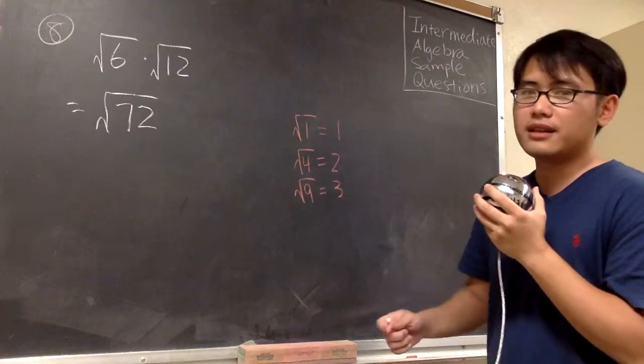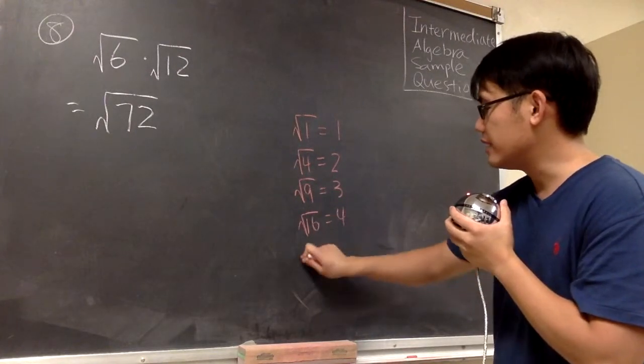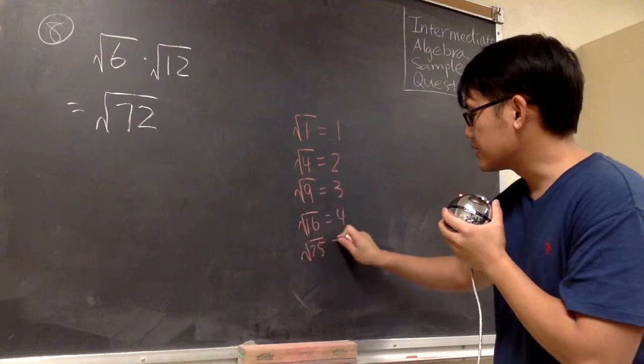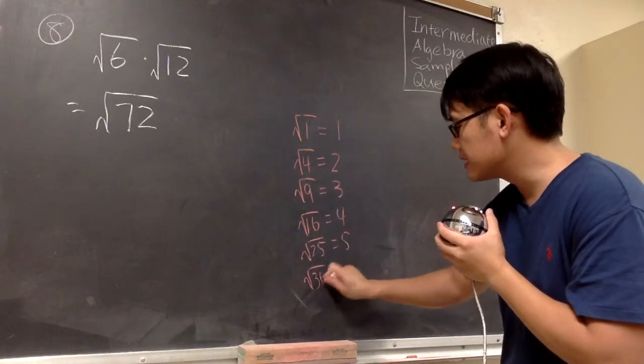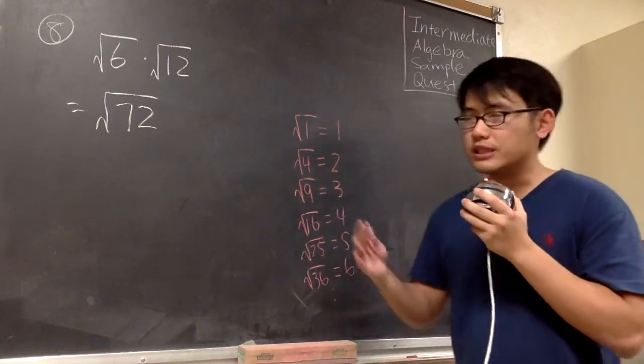And then the next one, square root of 25, that's five. And the next one, square root of 36, that will give us six, and so on. To simplify square root of 72, first we are not going to use one, and then we have to think about which of these numbers will go into the number 72.